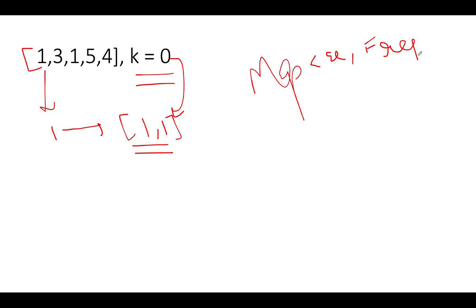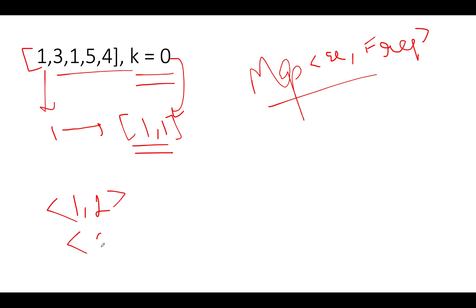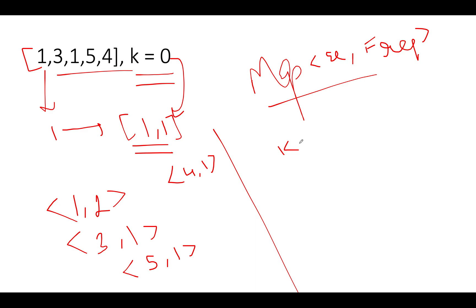We build a frequency map from the input array. For nums = [1, 3, 1, 5, 4], the map becomes: {1→2, 3→1, 5→1, 4→1}. We'll use this map to handle both cases: k greater than 0, and the special case of k equal to 0.